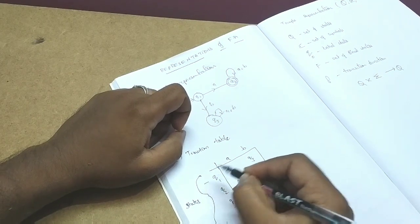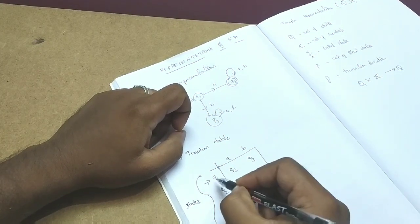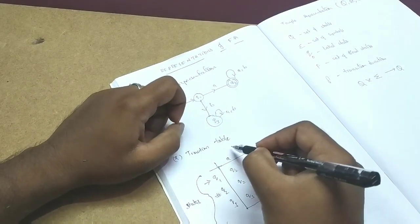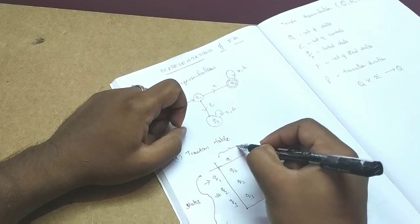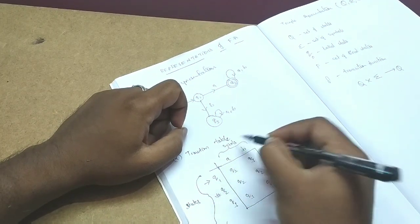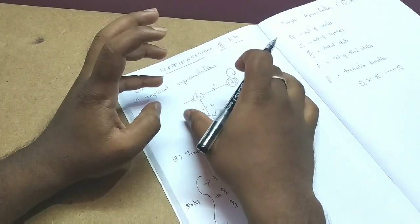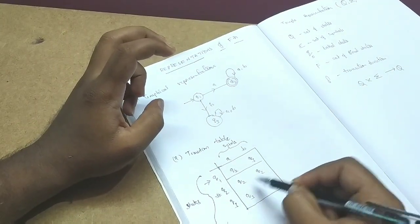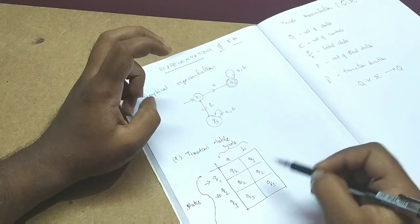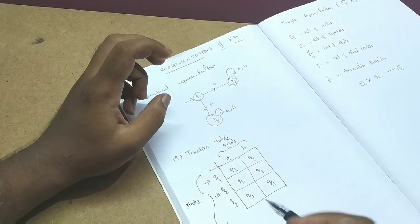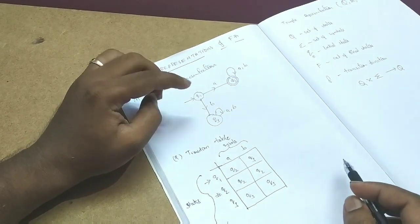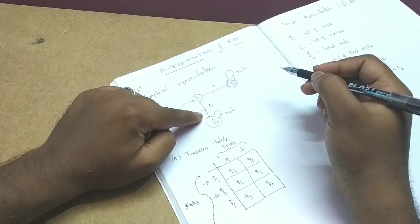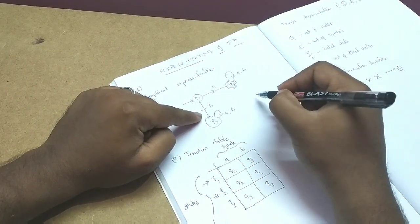Here I will represent the initial state and final state. This is the initial state and this is the final state. You can represent these with symbols. The meaning is the same. When you come to feed it into the machine, you can store it in a two-dimensional array.